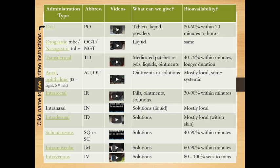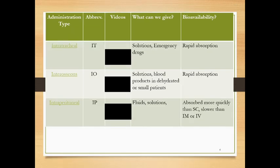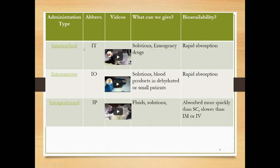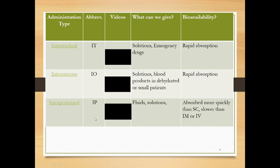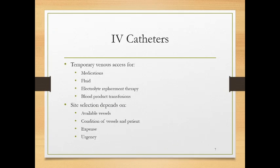There are a couple of other routes on the next slide: intratracheal, interosseous, and intraperitoneal — things you'll need to know about as well. Now, IV catheters — something you will need to know how to do. A catheter allows us to get temporary venous access. We're primarily looking at the vein, though sometimes we place in the artery. Most of the time it's the vein because the vein is the direct route back to the heart.